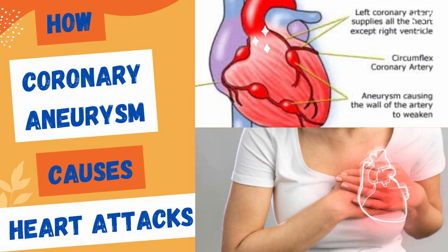2. Aneurysms of Coronary Arteries. Aneurysms are abnormal dilations or bulges in the arterial walls. In the context of coronary anomalies, aneurysms can occur within the coronary arteries. These aneurysms may be congenital, present at birth, or acquired due to certain conditions or diseases. When an aneurysm develops in a coronary artery, it can disrupt the normal blood flow, promote the formation of blood clots, and increase the risk of myocardial infarction.